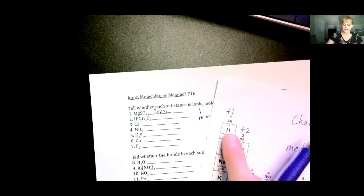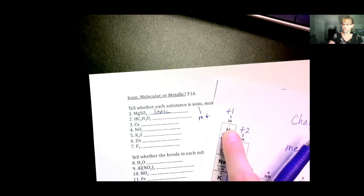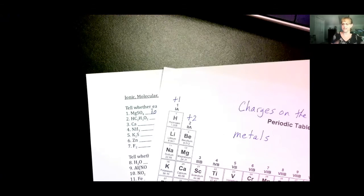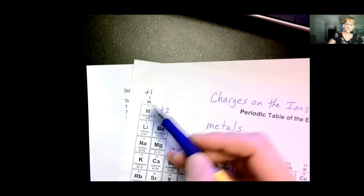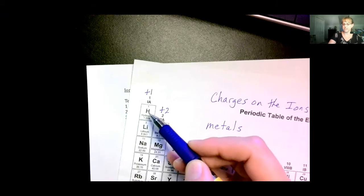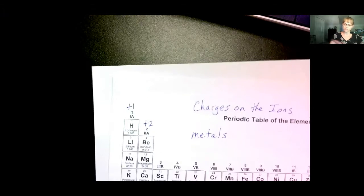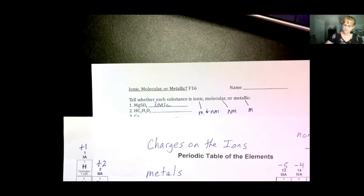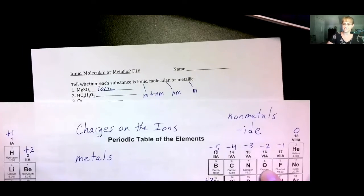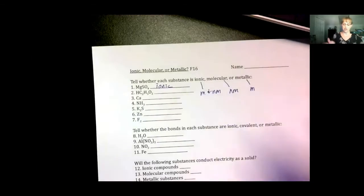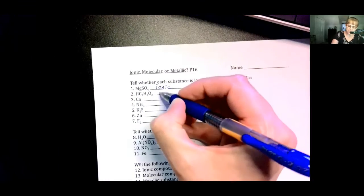HC2H3O2. Hydrogen, remember, hydrogen got on the wrong side of the periodic table. It is actually a non-metal, but it gets a positive one, which is why it's over here. So, hydrogen is a non-metal, carbon is a non-metal, hydrogen again is still a non-metal, and oxygen is a non-metal. We have all non-metals, therefore, it is molecular.